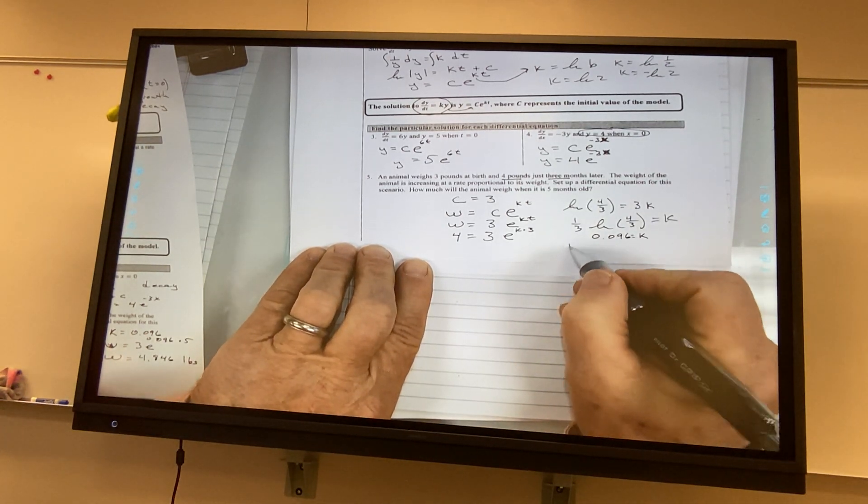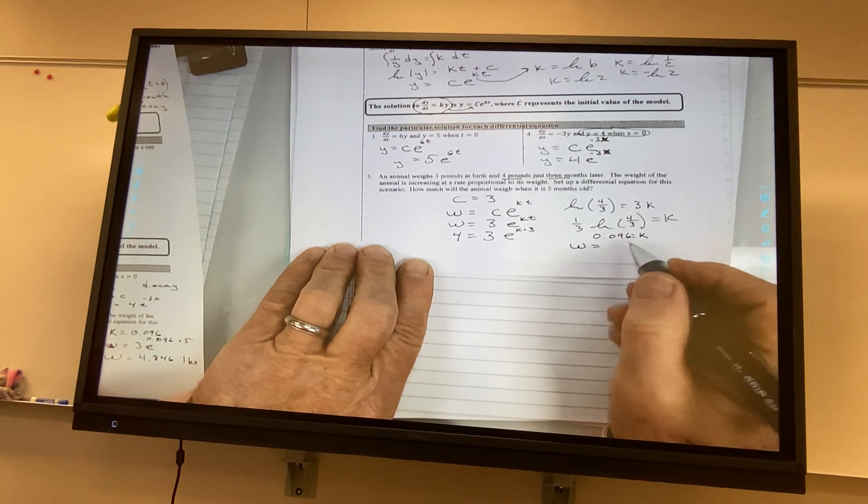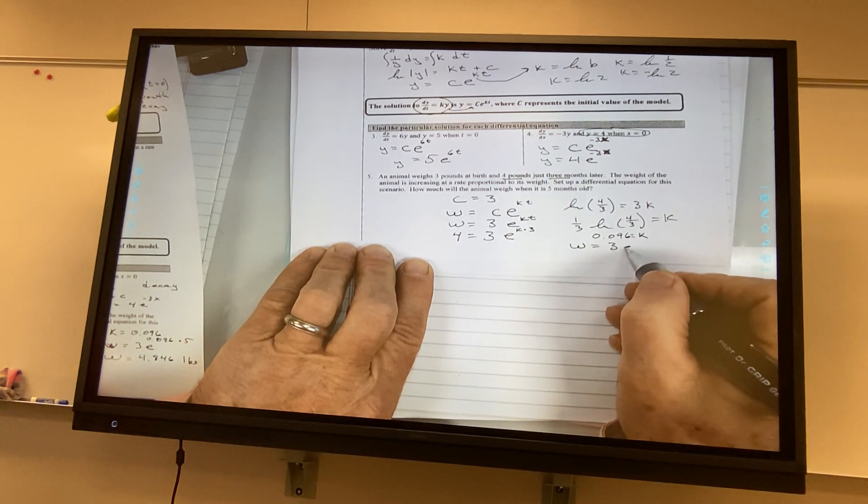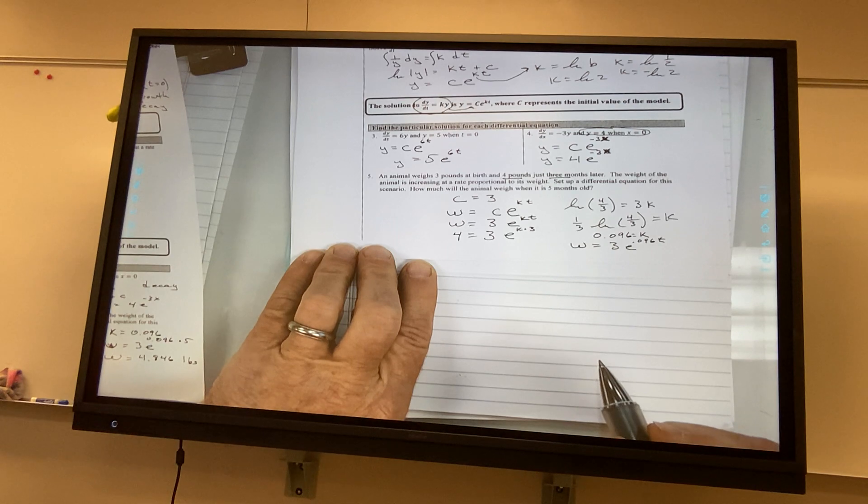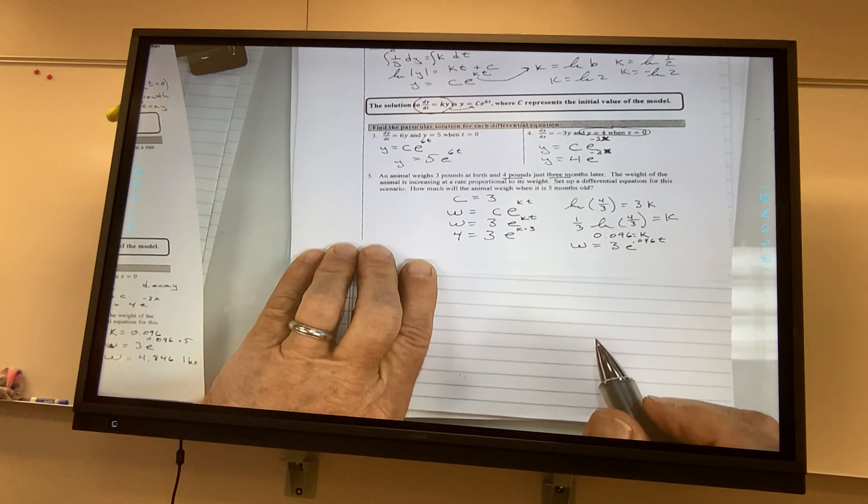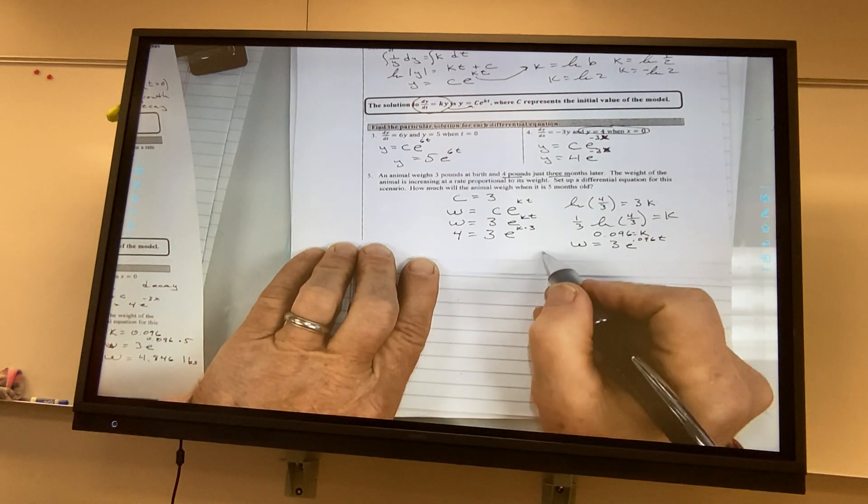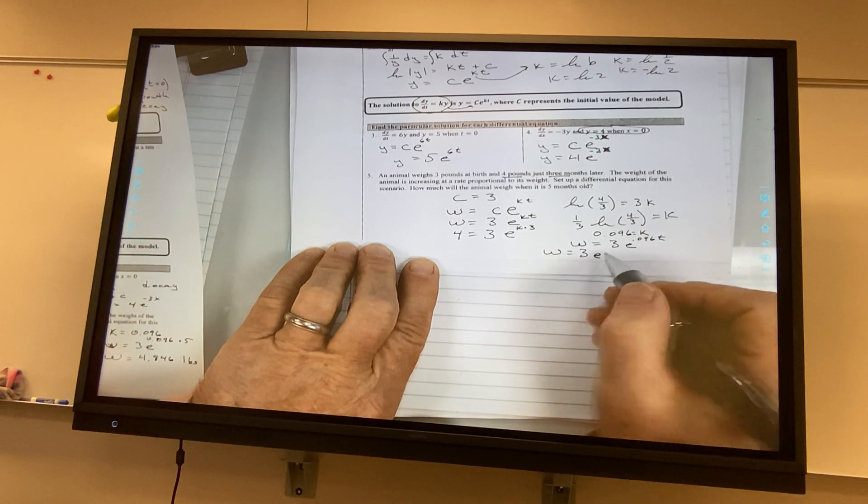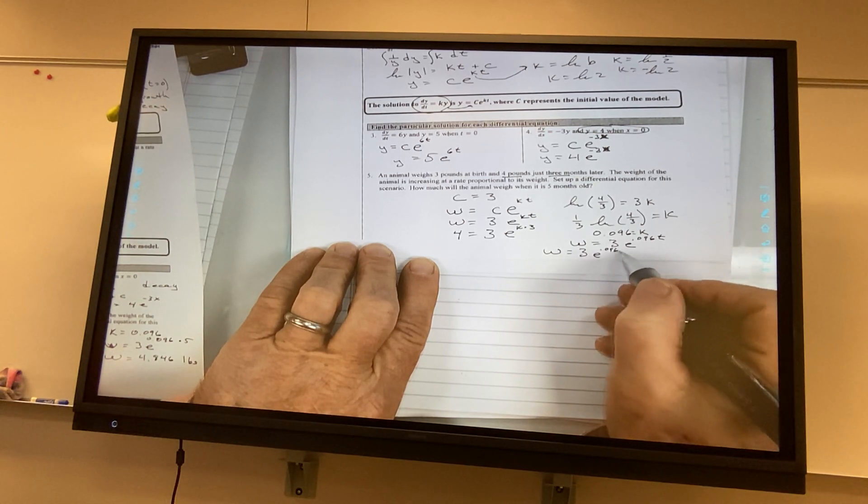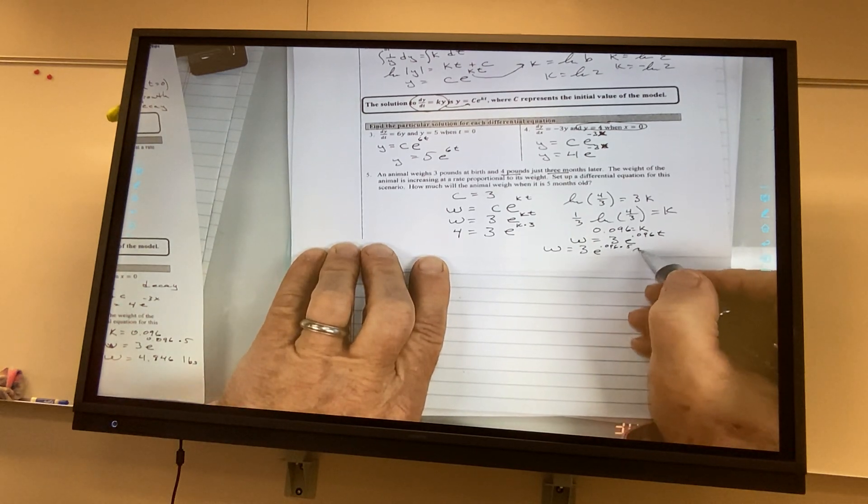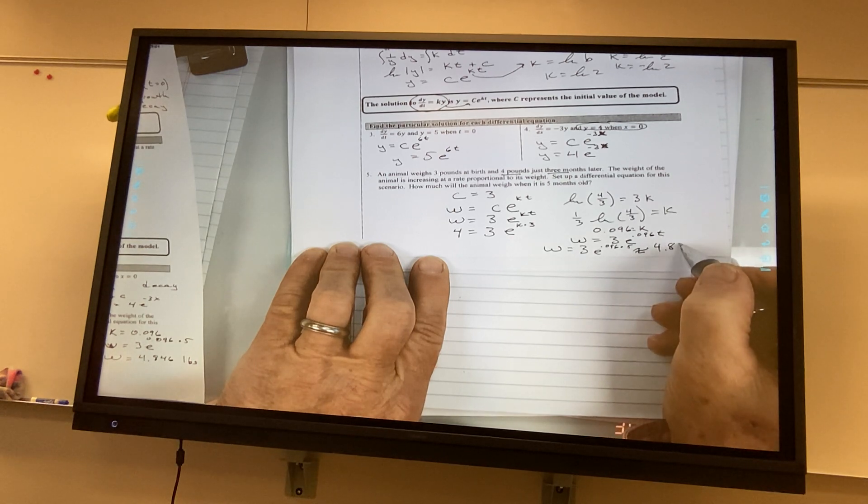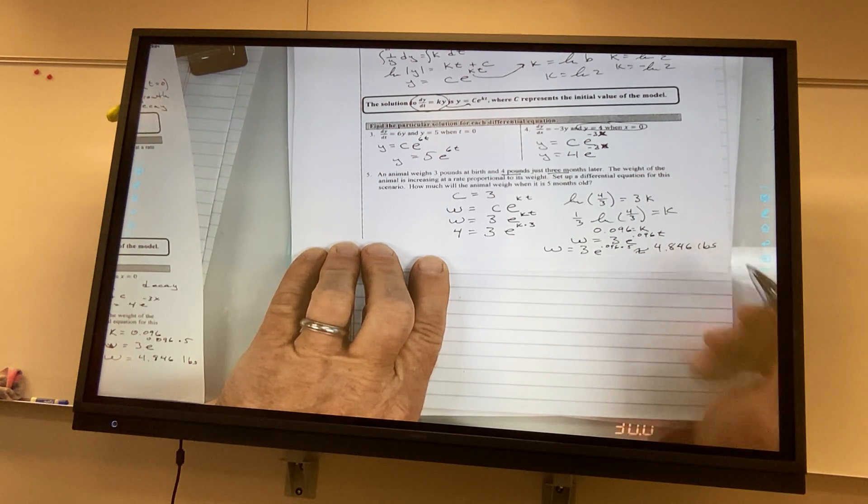So, that means my weight is equal to 3e to the 0.096t. And in how many months does it ask? Five. Five months? 3e to the 0.096 times 5 gave me approximately 4.846 pounds.